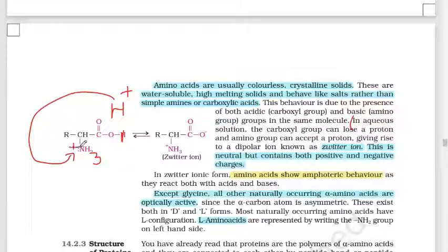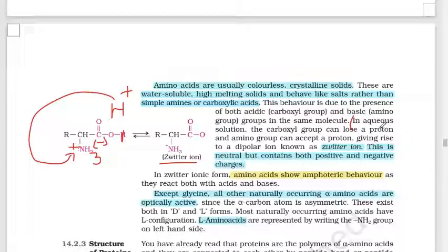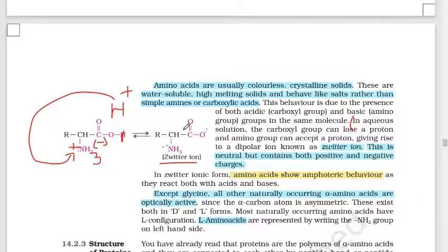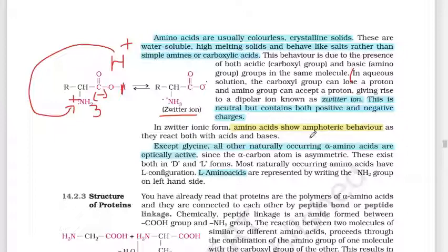When the carboxyl group loses H+, it becomes COO⁻ (negative charge), and when the amino group accepts H+, it becomes NH3⁺ (positive charge). This gives rise to a dipolar ion called a zwitterion. The zwitterion is neutral overall because it carries both positive and negative charges. In zwitterion form, amino acids show amphoteric behavior.